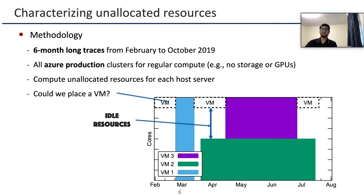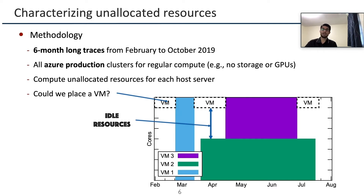First, we analyze the resource allocation in Azure data centers from February to October 2019. In terms of methodology, we compute the number of unallocated resources in each server based on the regular VMs running over time. Next, we check if we can allocate a hypothetical spot VM in each server and analyze how long and how many unallocated resources we could potentially get. Note that our characterization is pessimistic in the sense that unallocated resources are more stable in practice.